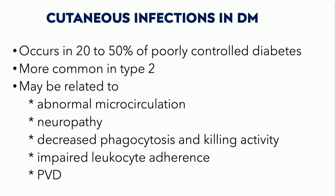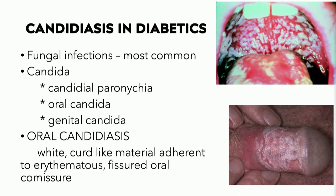Cutaneous infections in diabetes occur in about 20 to 50% of individuals with poorly controlled diabetes and are a common presenting sign. Examples include balanitis and intertriginous candidiasis. This occurs because diabetics suffer from abnormal microcirculation, neuropathy, decreased phagocytosis and killing activity, and impaired leukocyte adherence. Candidiasis can be the presenting sign of diabetes, compelling us to ensure these individuals get a hemoglobin A1c and fasting lab work.